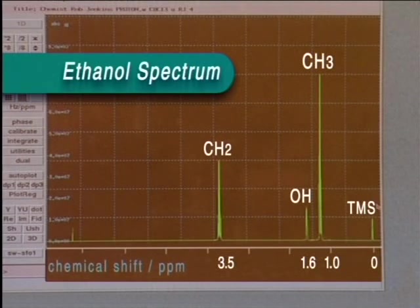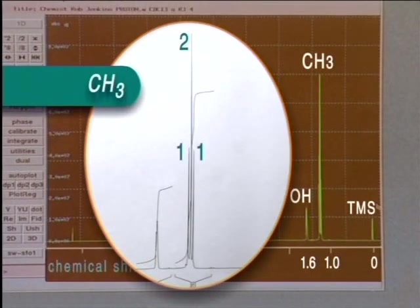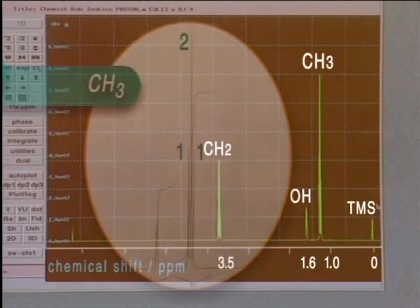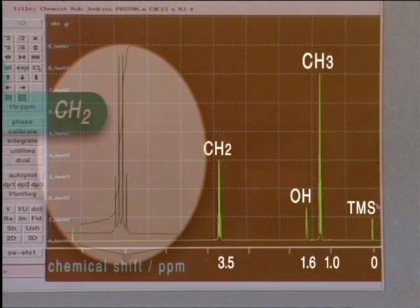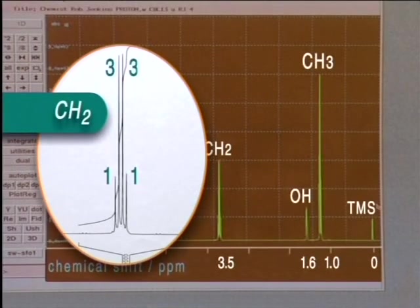Two adjacent protons split a peak into three, with heights in the ratio 1 to 2 to 1. And three adjacent protons produce four peaks, with height ratios 1 to 3 to 3 to 1. This is sometimes called the n plus 1 rule. Interpreting proton NMR spectra can thus provide a great deal of information about molecular structures.